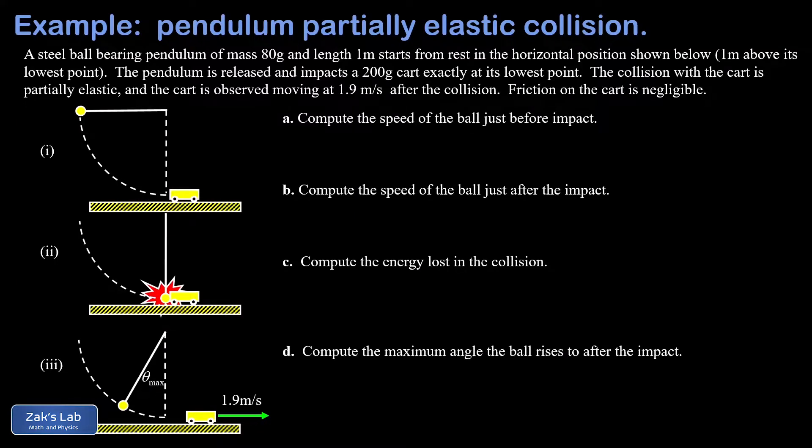In this video, we're looking at a partially elastic collision between a pendulum and a cart. We're given the mass of the pendulum bob, that's 80 grams or 0.08 kilograms. We're given the length of the pendulum, that's one meter. And we're given the mass of the cart that the pendulum runs into, that's 200 grams or 0.2 kilograms.